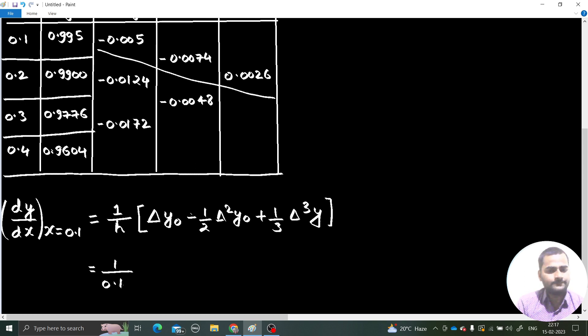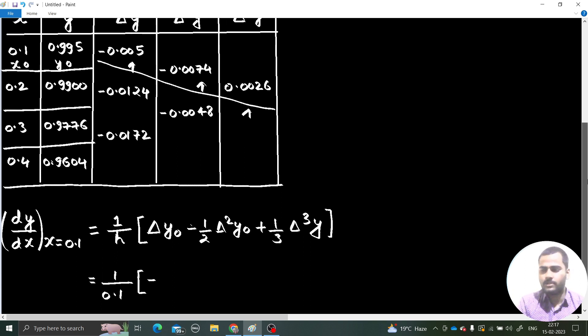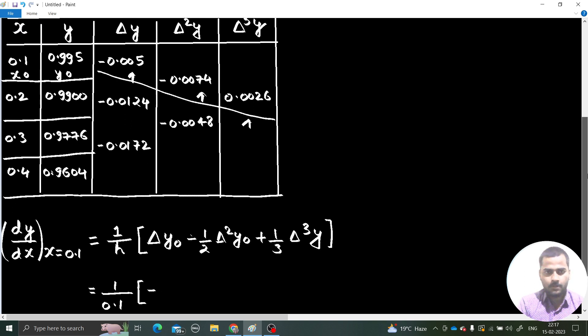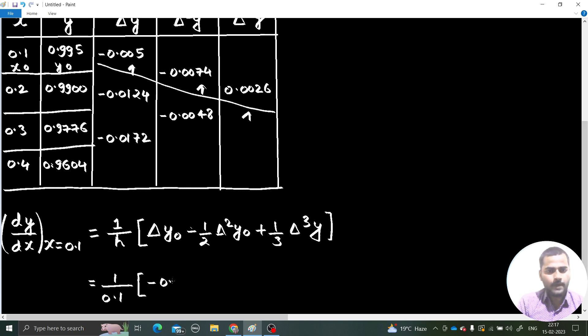So, 1 divided by 0.1. What is the value of first difference? First difference is here. Second difference is here. And the third difference is here. This is x₀ and this is y₀. Now, first difference is minus 0.005 minus half times, what is the second difference? Minus 0.0074 - minus minus it will become plus 0.0074, and plus 1 by 3, what is the third difference? It is 0.0026.